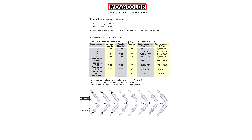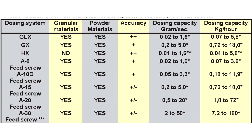Now let's actually select a dosing tool. Using the worksheet from MovaColor, there are several pages explaining how to select tools and the different tools available. Focusing on the chart on the front page — specifically the column two from the right showing dosing capacity — you can see that the GLX, which is a dosing cylinder, has a feed range of 0.02 to 1.6 grams per second. Now that we've learned to calculate grams per second, we can simply select the proper screw or dosing cylinder for the application. If you have any questions, give us a call — we'd be happy to help you go over all your different applications.